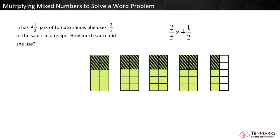This model now represents two-fifths times four and a half. To find the product, see how many parts each whole is broken into, and how many parts are shaded in both colors. Each whole is broken into ten parts. Four-tenths of each whole is shaded. Two-tenths of the last whole is shaded.